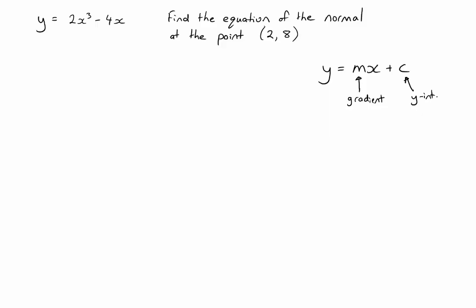Okay, so in this video I'm going to go through how to find the equation of a normal to a line at a point. Just like in the previous video about finding the equation of the tangent, we're going to be finding the equation of a straight line. As you can see here on the right, we need to find y equals mx plus c. So we need to find the gradient and the y-intercept.